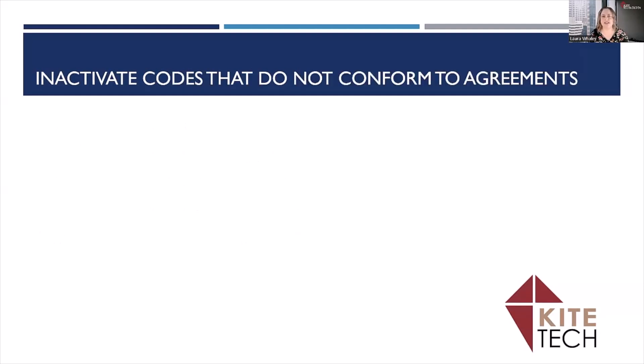Next, you want to inactivate any policy status codes that do not conform to commission agreements. This would be your carrier commission agreements that you are paid by your carriers or brokers. Carriers typically pay us for new or renewal business. If a status code cannot easily be fit within new or renewal, it makes it hard for EPIC to determine which commission should be applied.